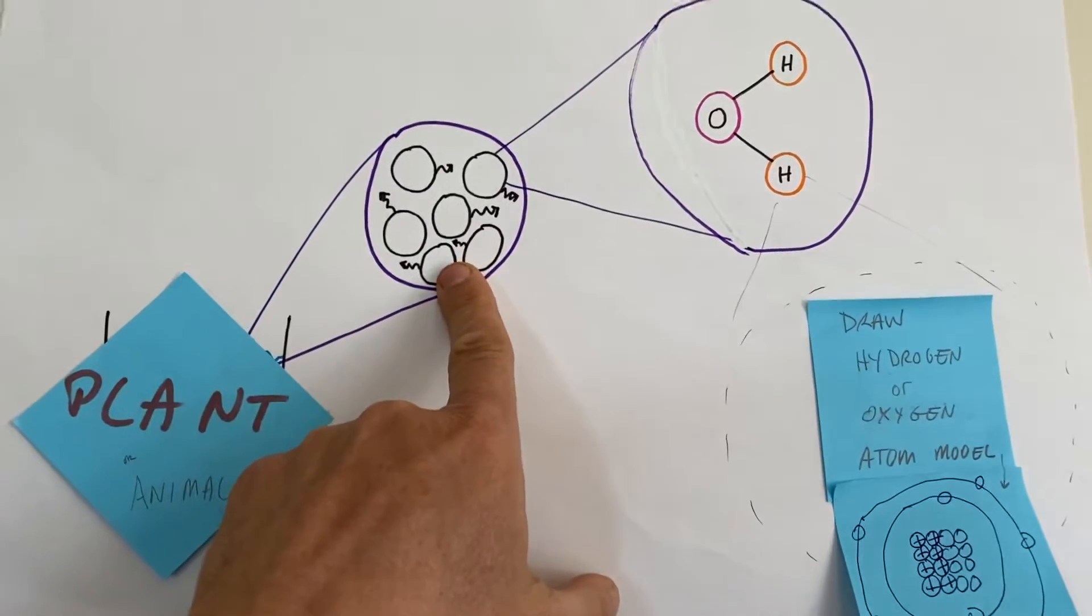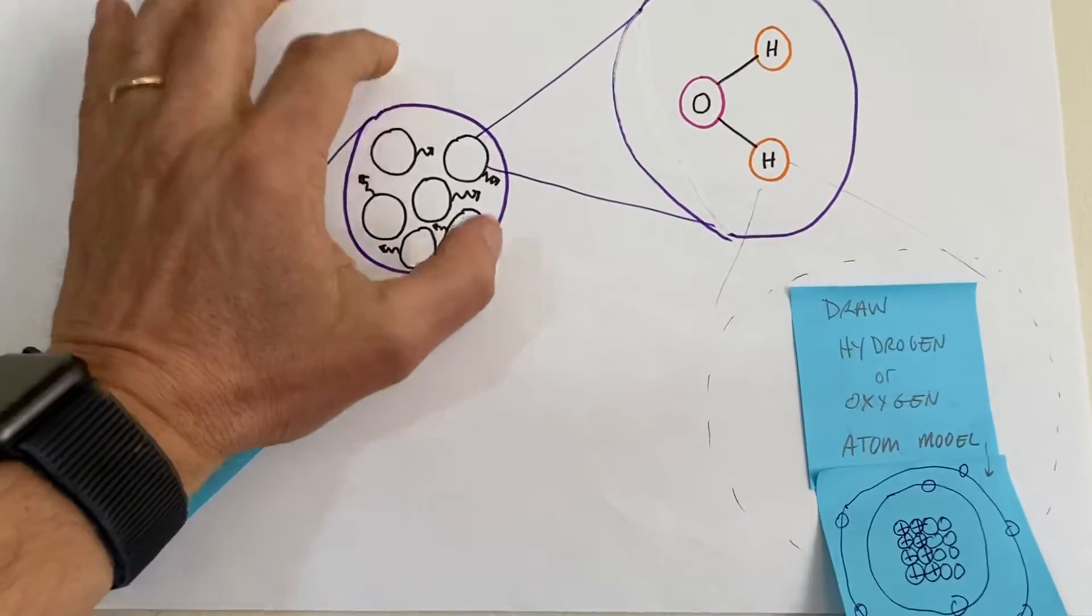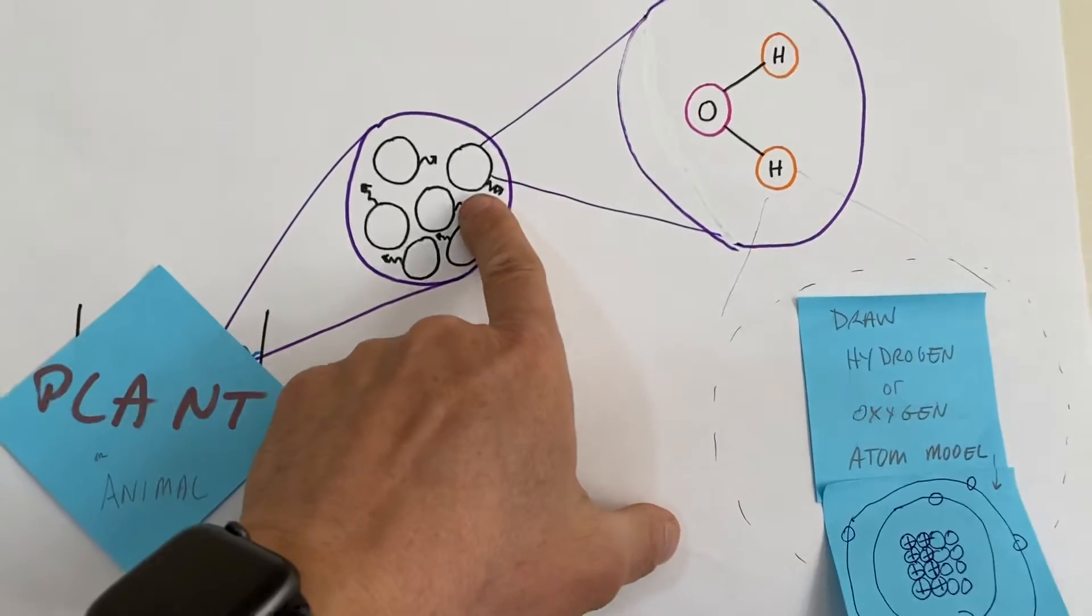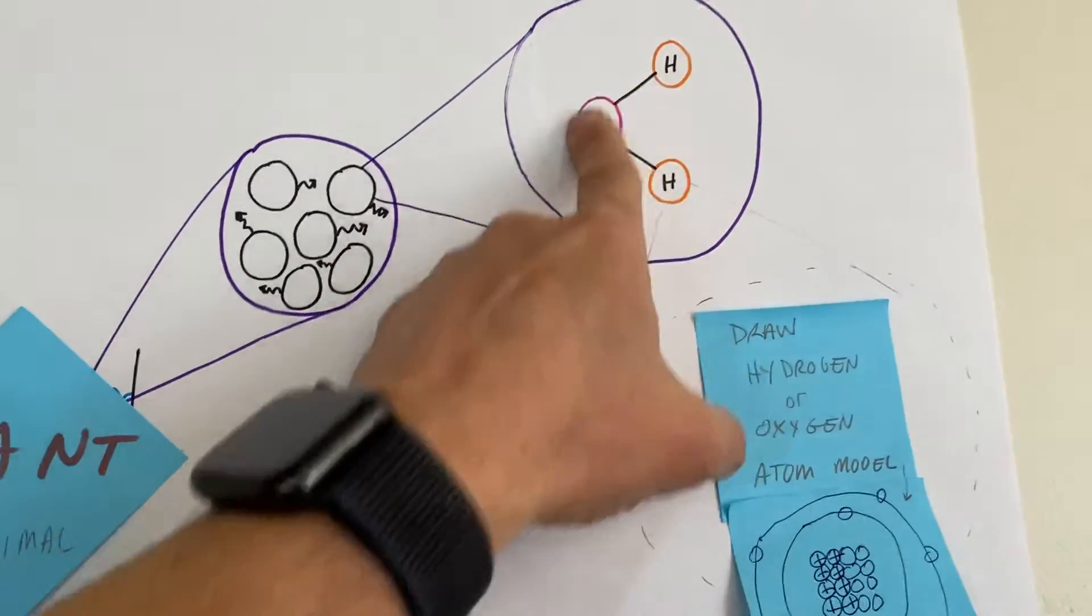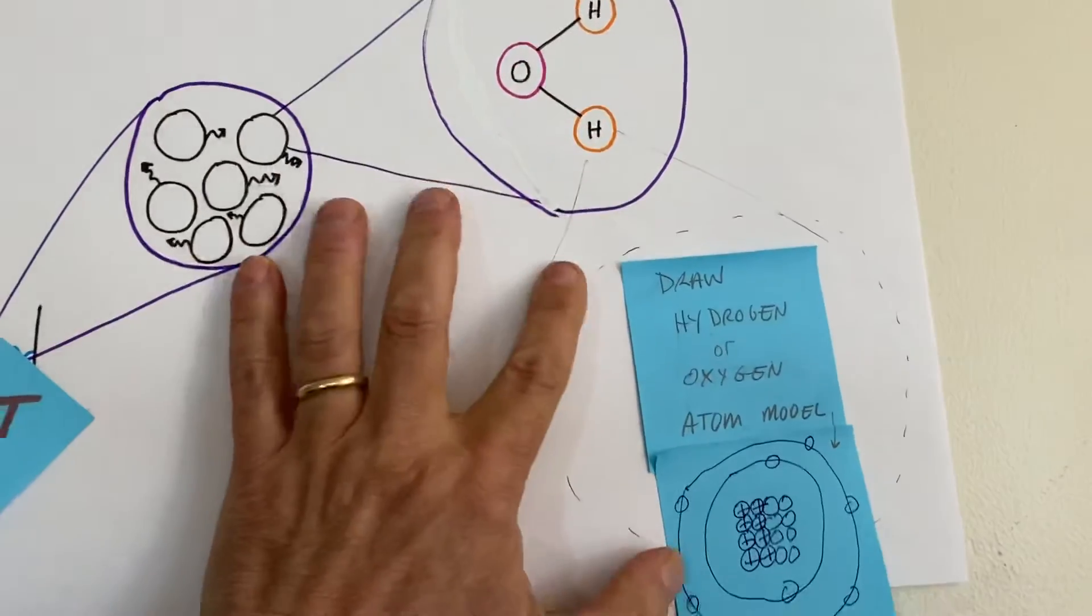I've got liquid particles here because all plants have water in them. Then zoom in on one of the water particles to draw the picture of the molecule of water.